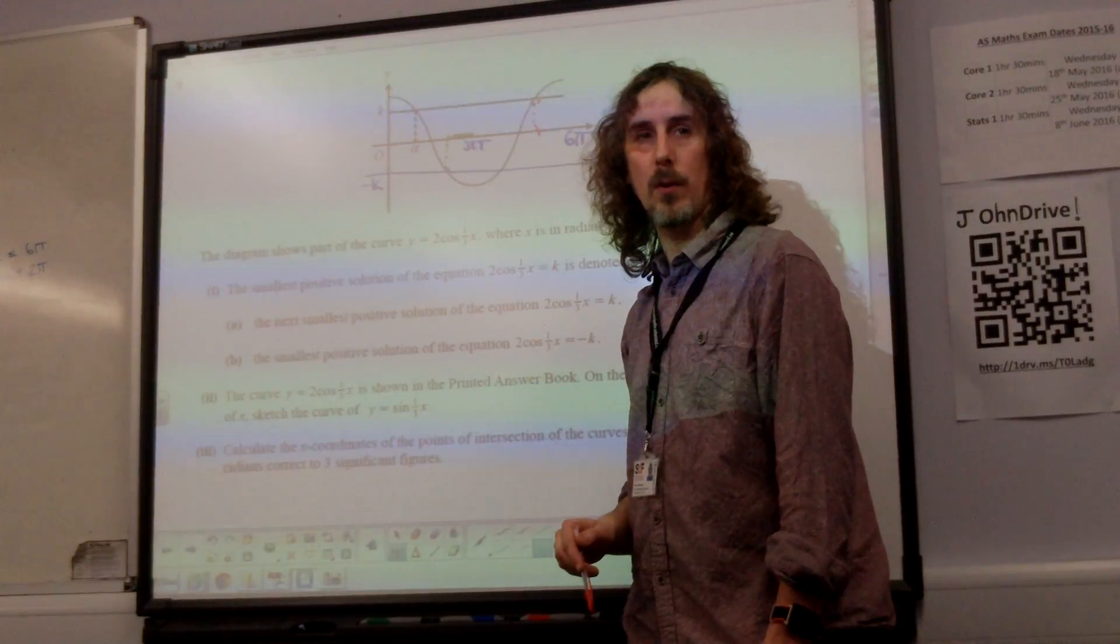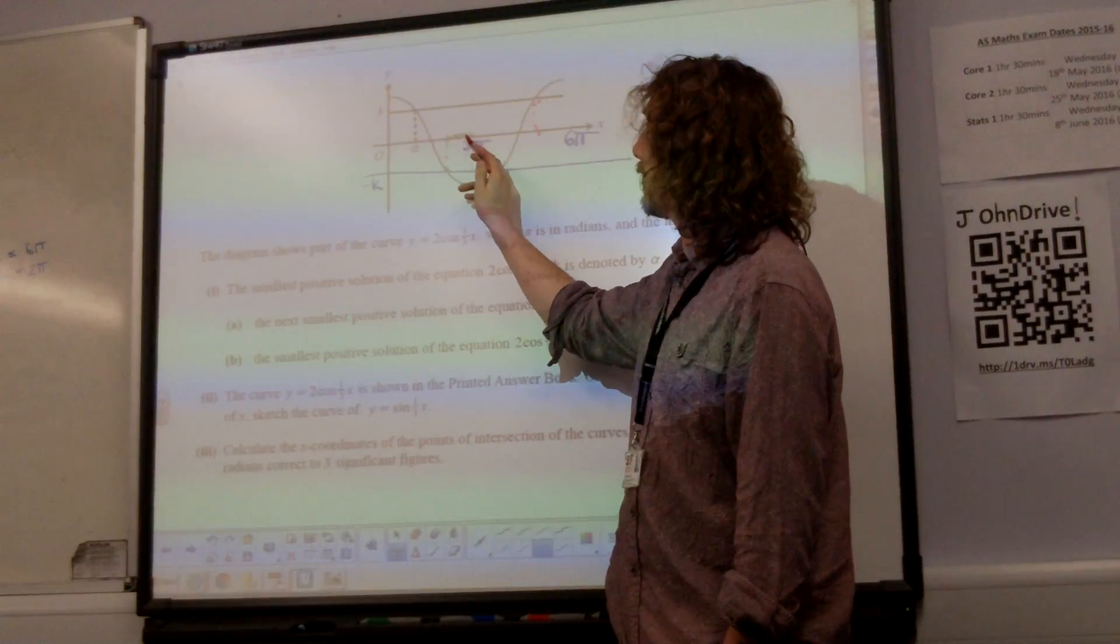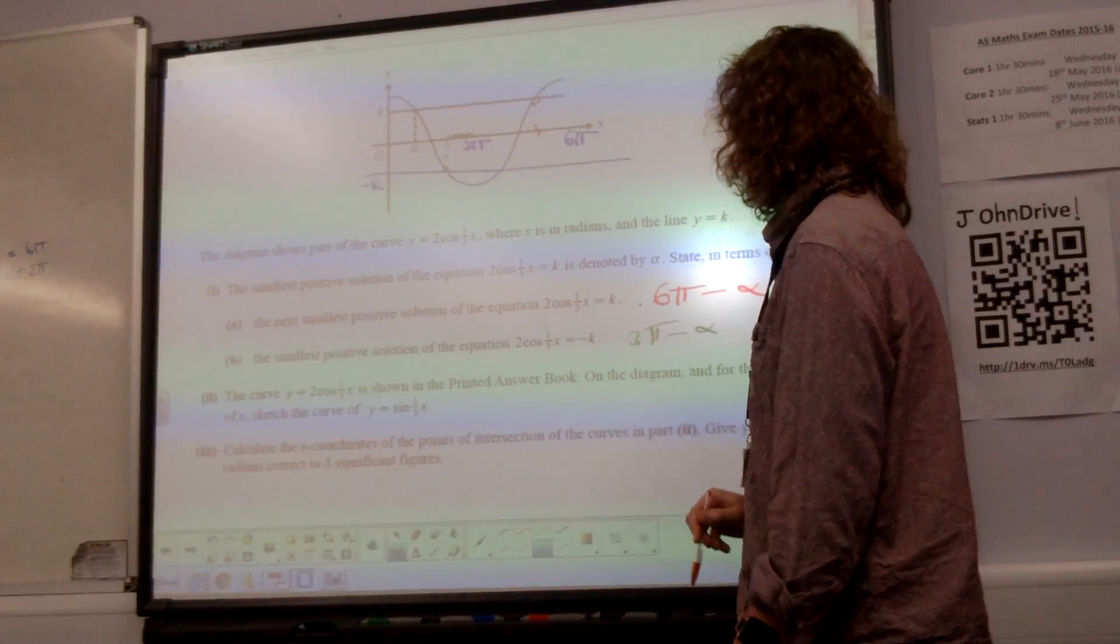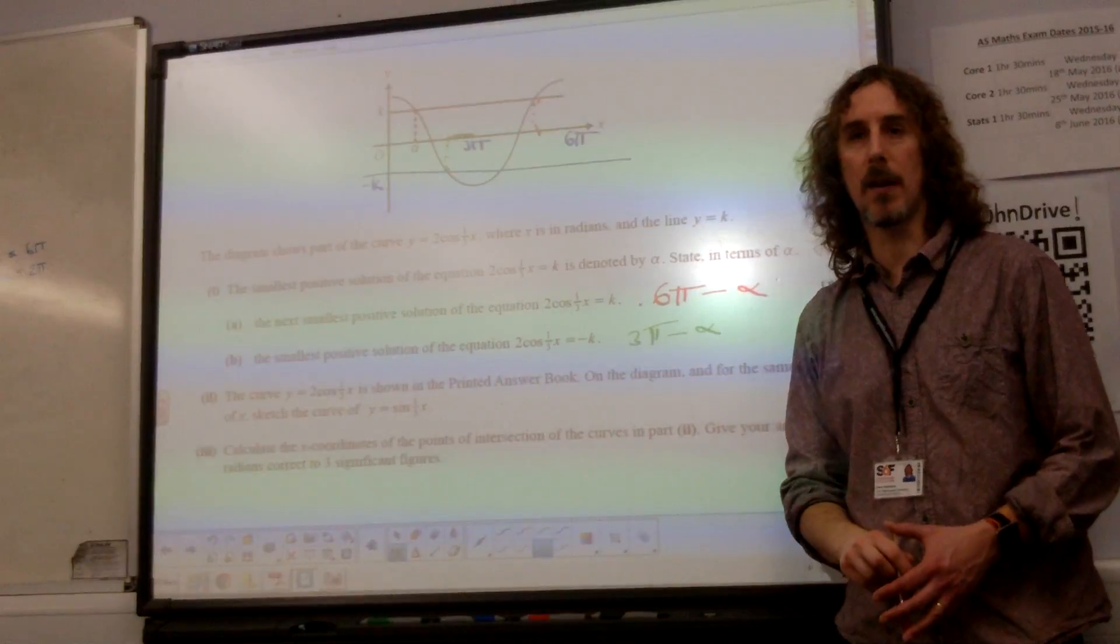So the second one is 3 pi, take away that distance of alpha. So that one is 3 pi minus alpha.